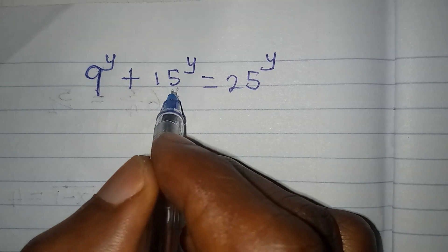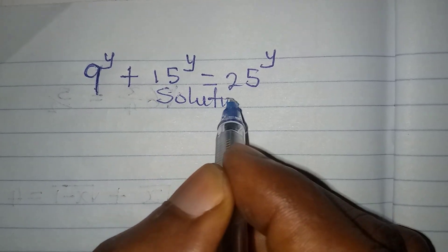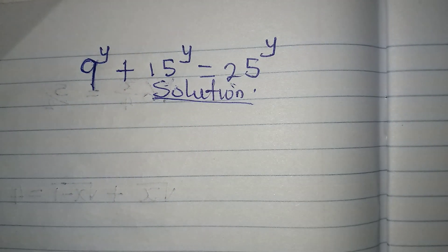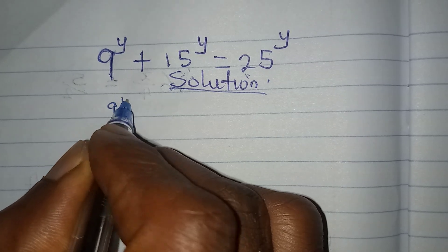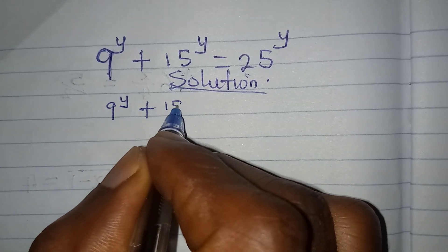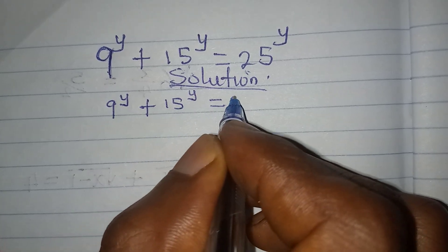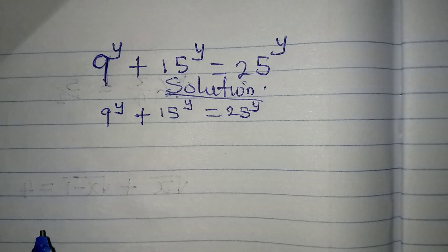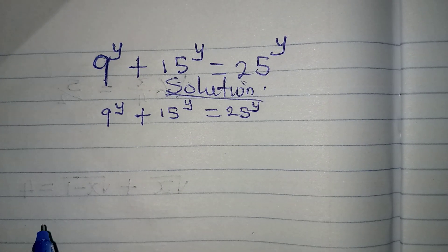Hello everyone, let's provide a solution to this problem very quickly. We have 9 to the power of y plus 15 to the power of y equals 25 to the power of y. Now what do I do in this case?